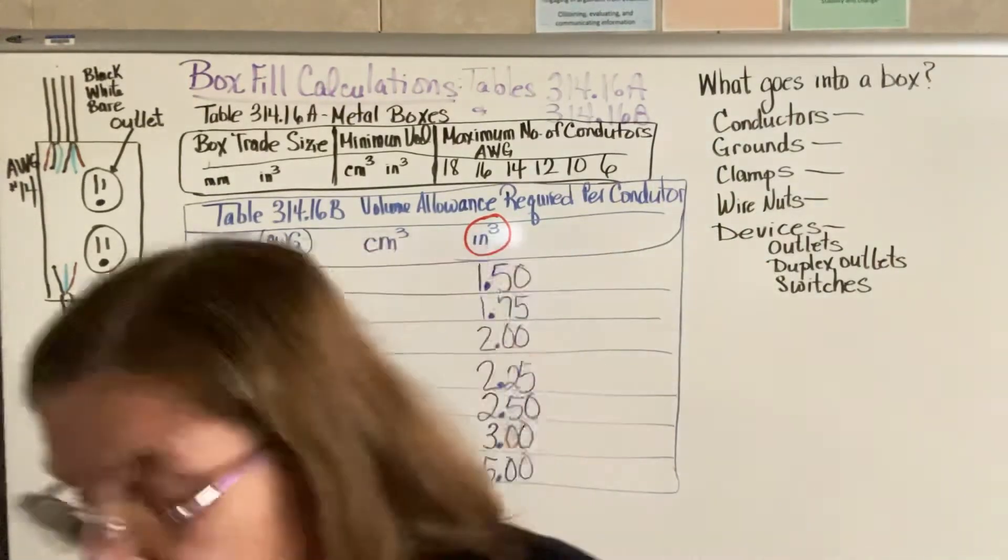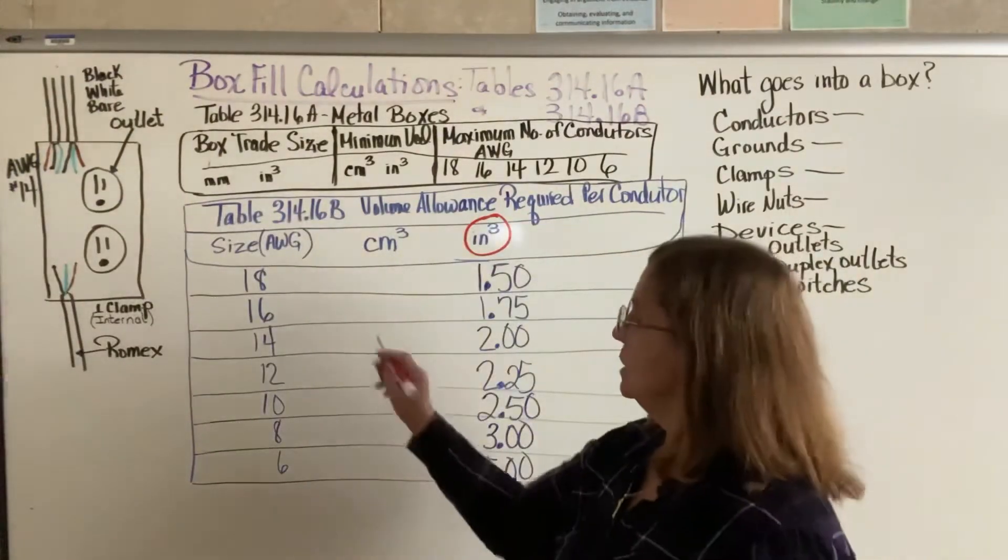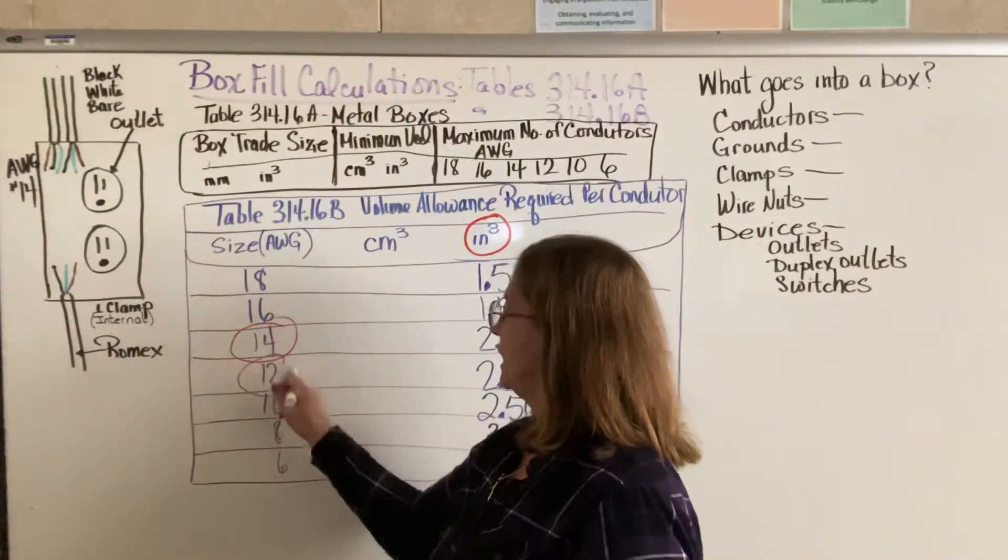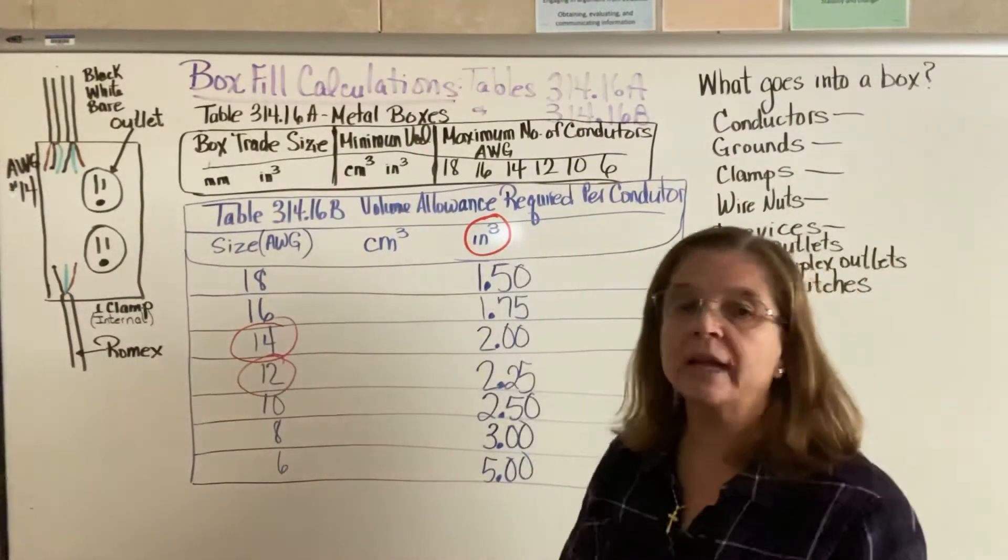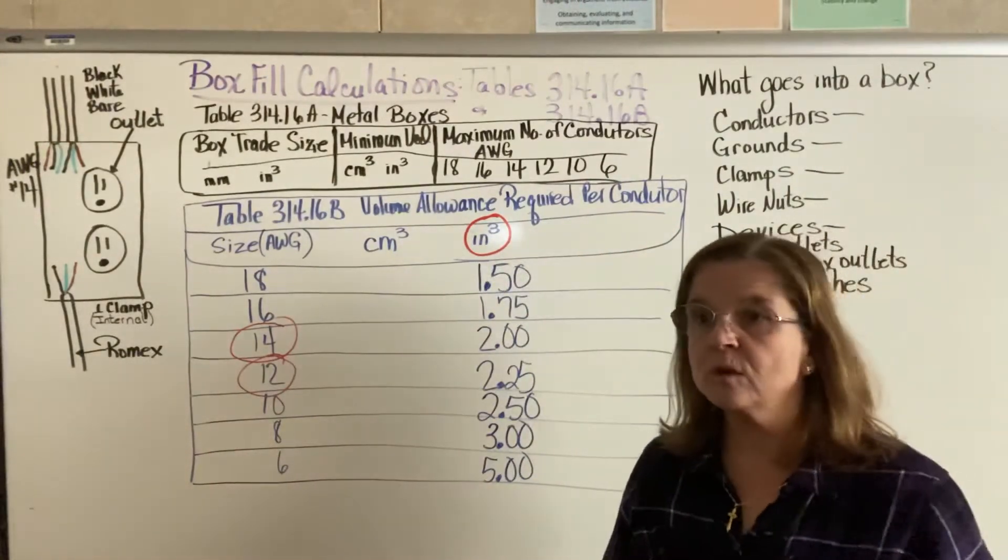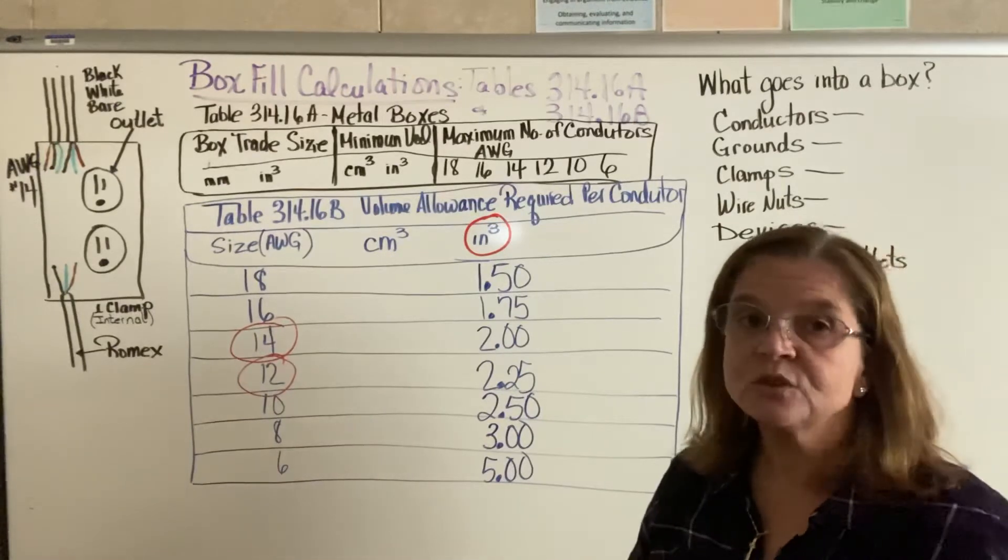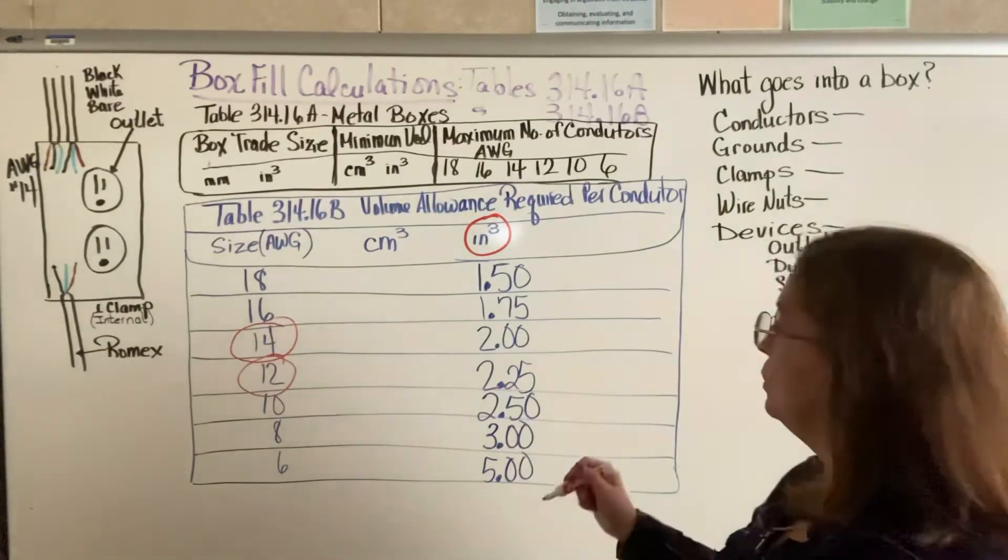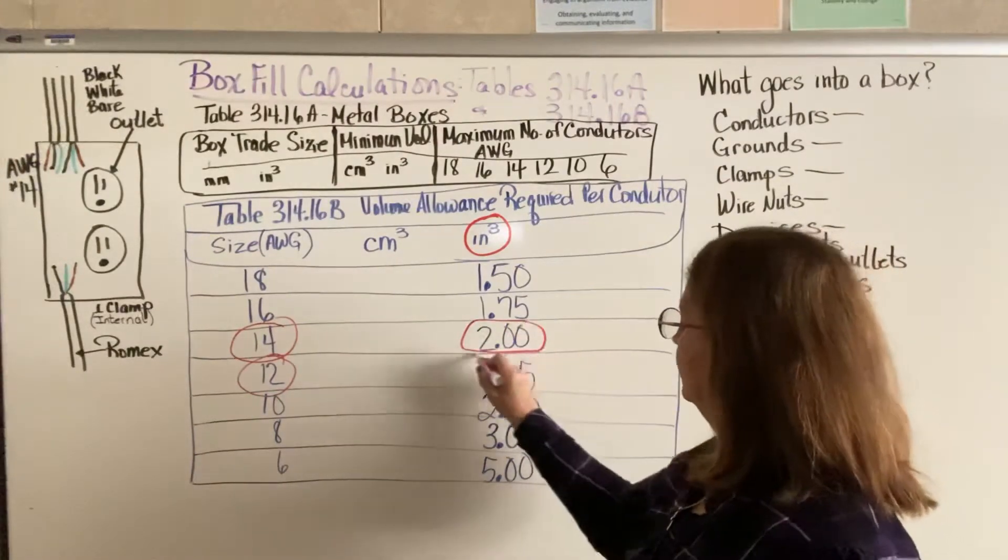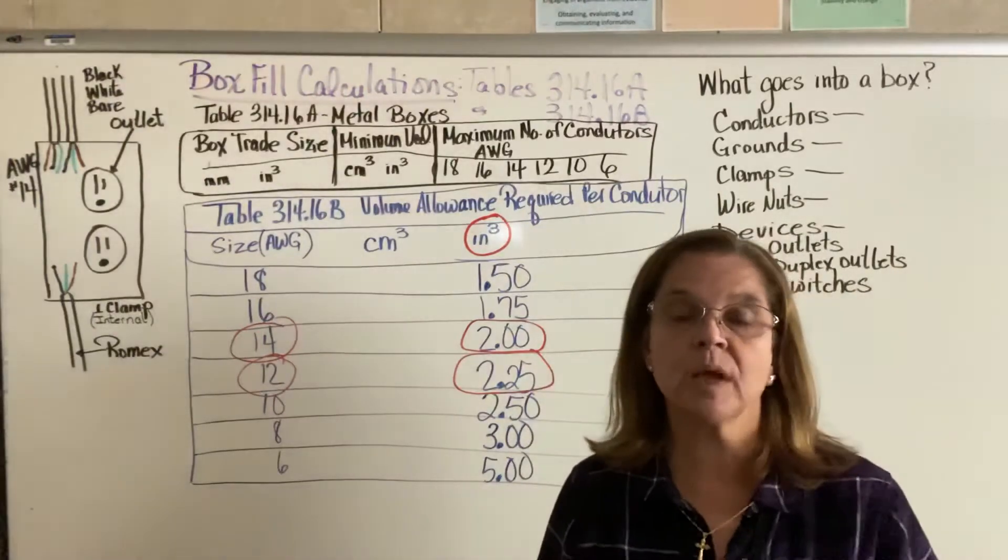For the most part, if you're working in residential, you will use size 14 or size 12. I did leave the millimeters out and I only circled inches cubed. So most of the residential work you will do will be either 14 or 12. These two numbers are the two that really become important.